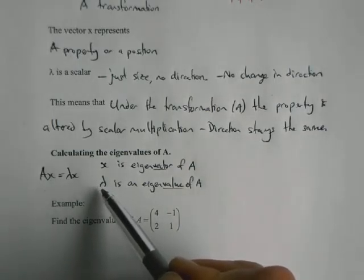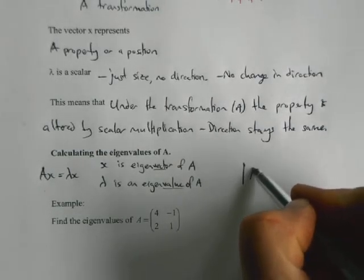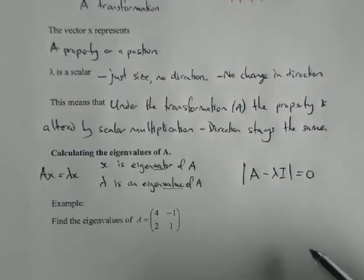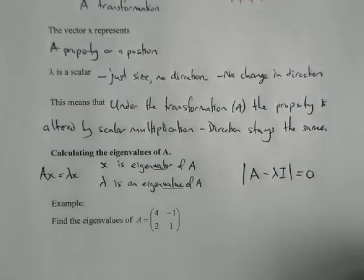To find this, you need to be able to solve the equations. If we work out the determinant of A minus lambda I equals zero, if we solve that, then we will find the eigenvalues of A. We'll be able to solve that for lambda and work out the eigenvalues of the matrix A.